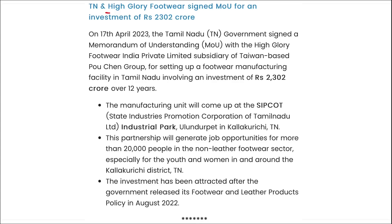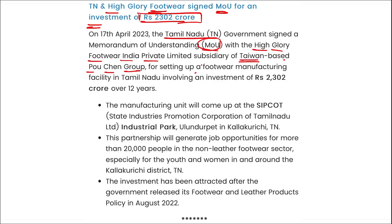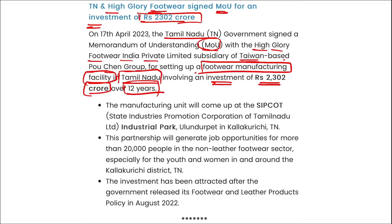Tamil Nadu and High Glory Footwear signed an MOU for an investment of 2,302 crore rupees. The Tamil Nadu government signed an MOU with High Glory Footwear India Private Limited — a subsidiary of Taiwan-based Pau Chain Group — to set up a footwear manufacturing facility in Tamil Nadu involving an investment of 2,302 crore rupees over 12 years.